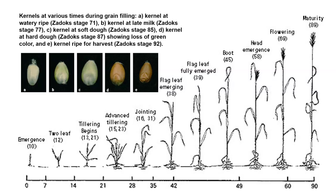Then you get soft dough, where the material begins to get some consistency on the inside. Finally, you get hard dough. At hard dough, you get the loss of the green color and you get the ripe kernel. They say that you harvest somewhere between hard dough and ripe. You can see the different stages that the grain goes through.